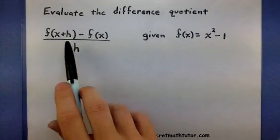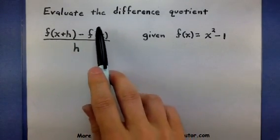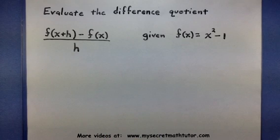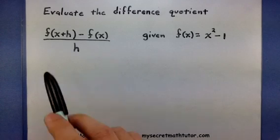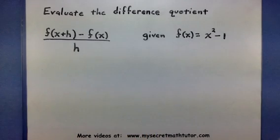First, you have this f of x plus h, then you have an f of x, and then an h on the bottom. So you know what f of x is, and the h is just going to stay the same, it's this guy. That's the one that causes issues.